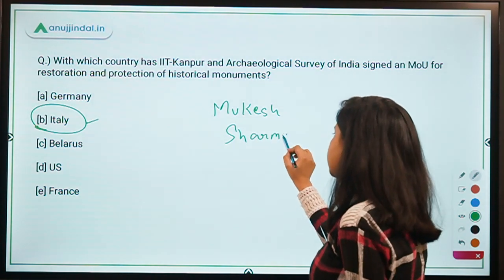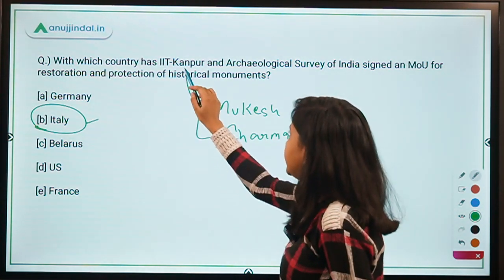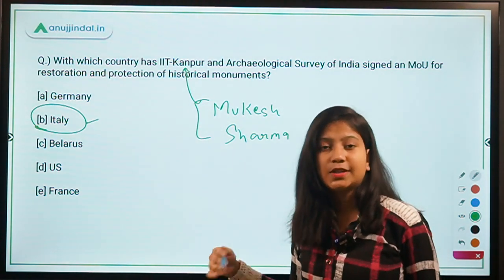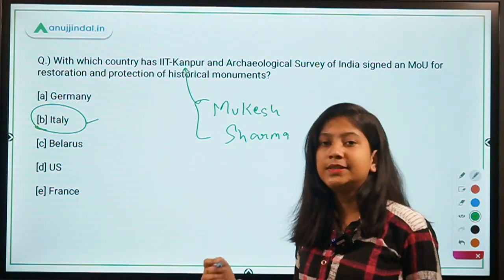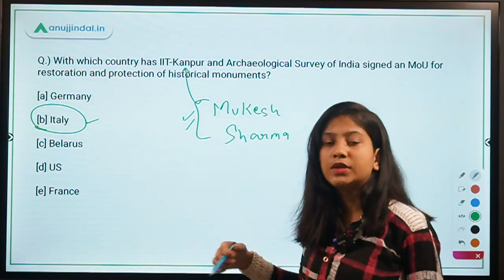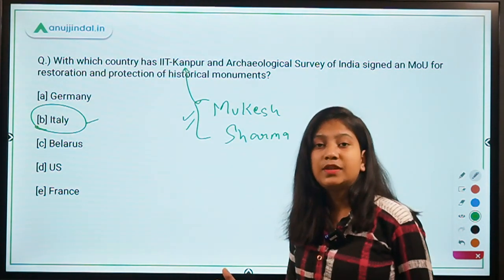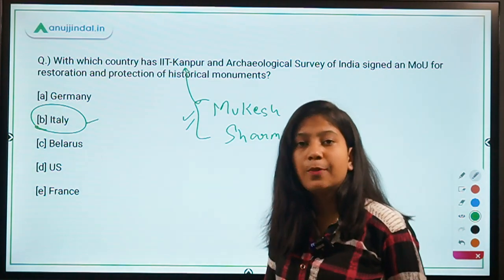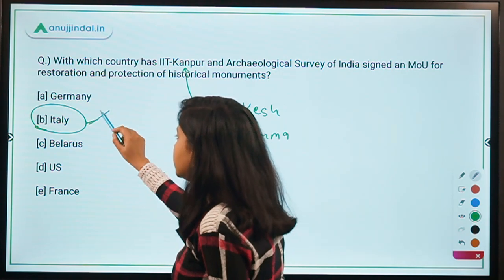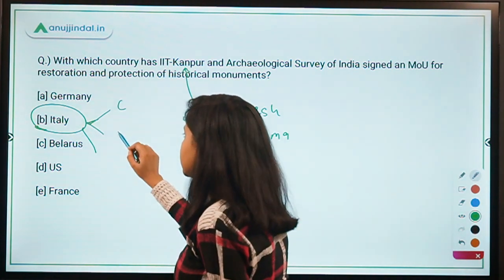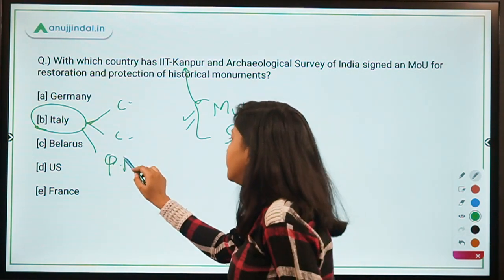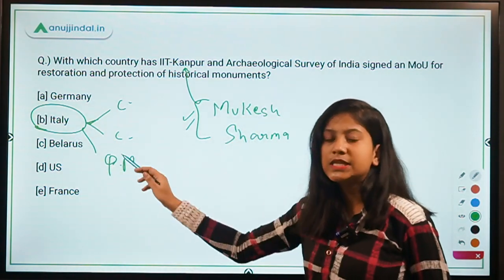One important point here is Professor Mukesh Sharma of IIT Kanpur — he will be the coordinator of all activities under this MOU. His name is quite important, so do remember it. For your homework, I'll give you three questions: the currency, capital, and PM of Italy — tell me the answers in the comment section below.